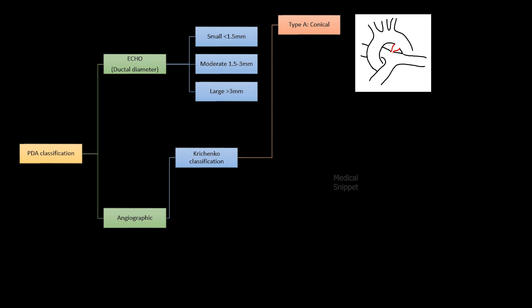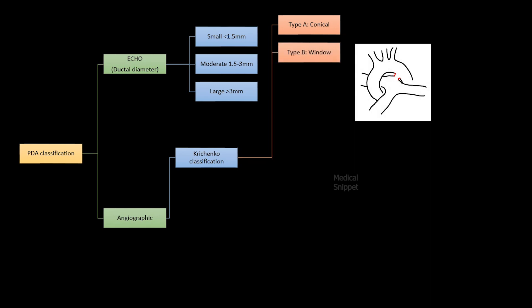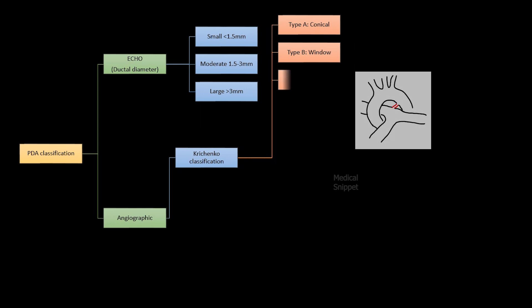Type B is a window-like PDA that is very short and wide. Type C is a tubular PDA without any constrictions.